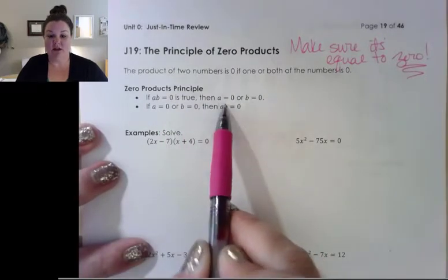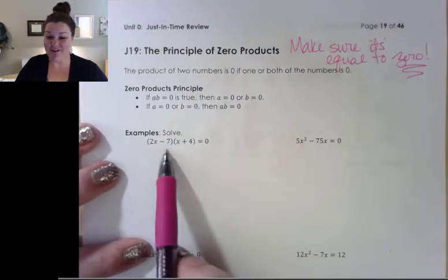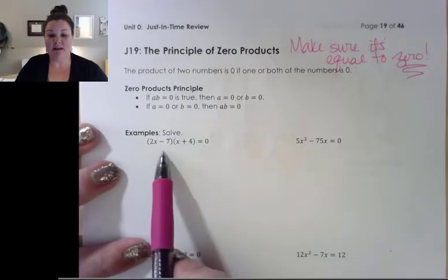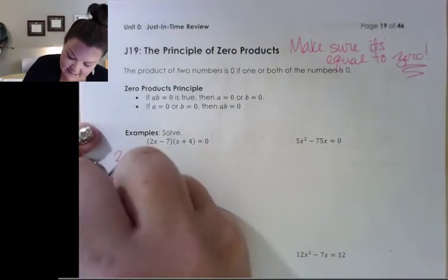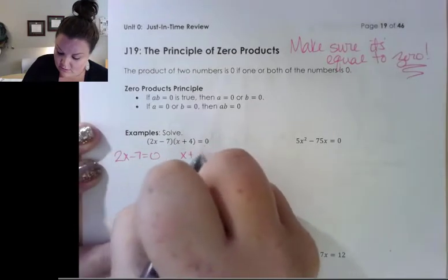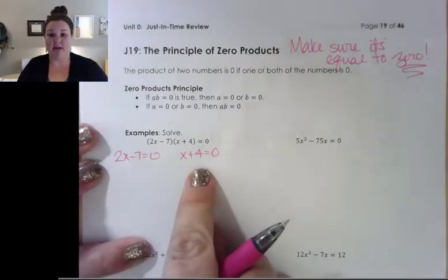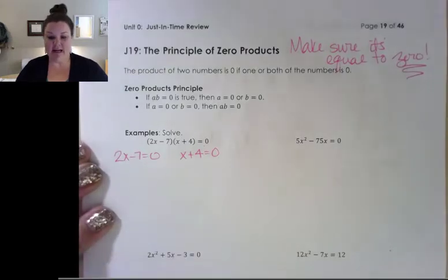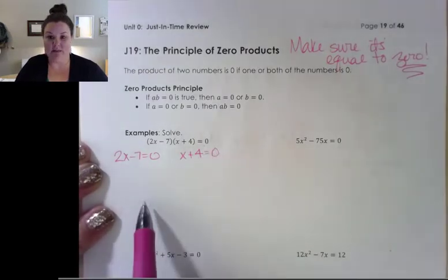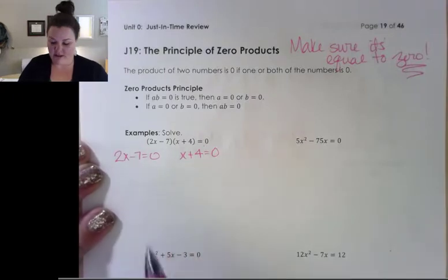So as long as I have two things being multiplied — notice, like factors, right, factors are multiplied — and it's equal to zero, then we can solve this by just setting those factors equal to zero and solving each of the equations that creates. This is the nice case. This one's already factored for us and it's already equal to zero, so all we have to do is solve each little equation.